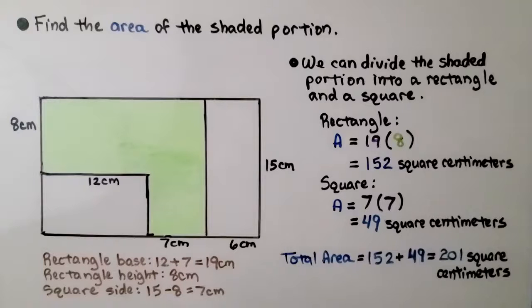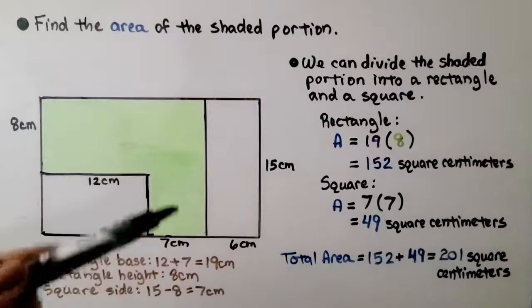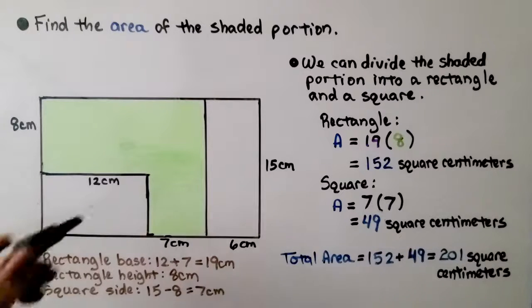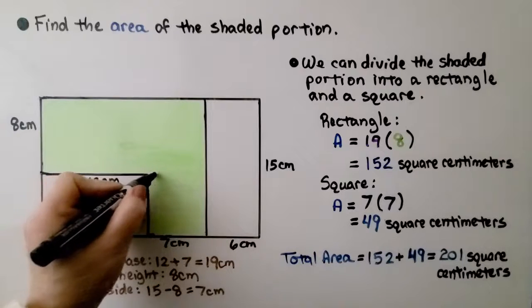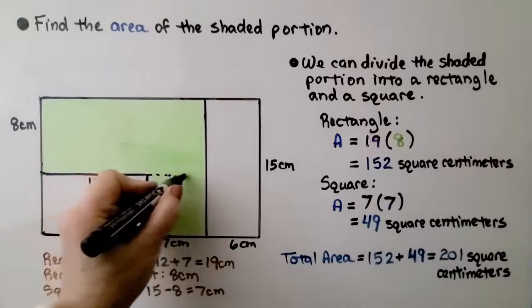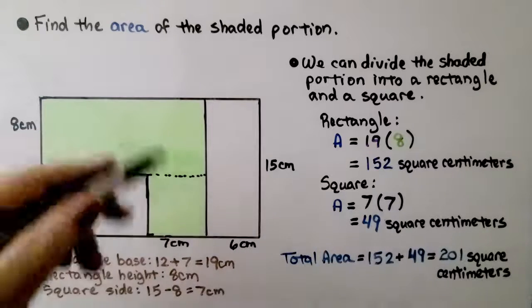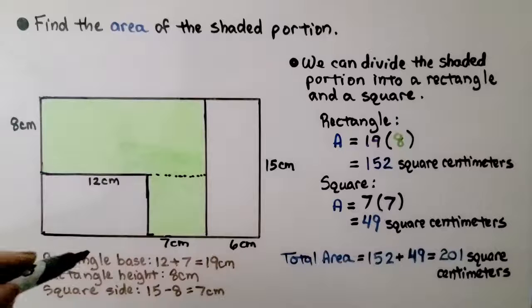Here it's telling us to find the area of the shaded portion. We can look at the green area and we can divide this shaded portion into a rectangle and a square. If we put a line segment coming across here, we have a rectangle and a square.